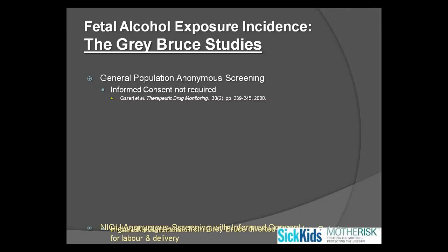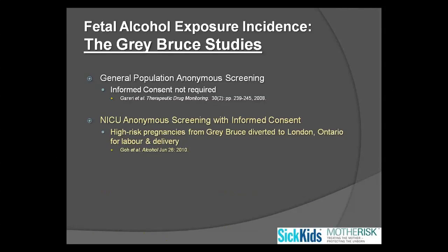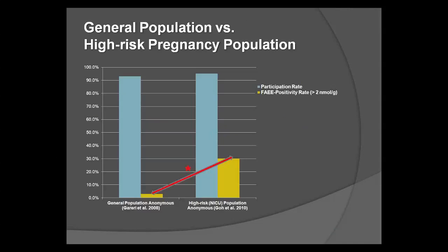We followed up this study looking at children born to high-risk pregnancies from this region. This population was not captured in the first study because it's a relatively rural region — women with high-risk pregnancies were diverted down to London, Ontario to a tertiary care hospital for labor and delivery. This study was published in 2010, and what we found by looking at the neonatal intensive care unit was a significantly higher positivity rate of FAEE. We found that in the high-risk pregnancies, there were 10 times more children who were exposed to heavy amounts of alcohol prenatally.